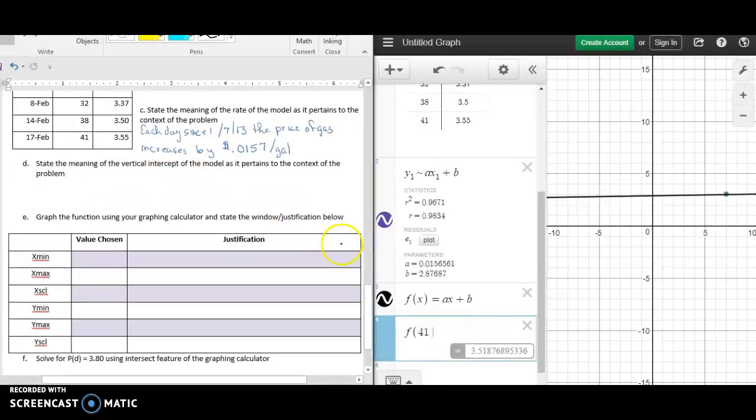Now we want to state the meaning of the vertical intercept. We know that the vertical intercept is 2.877, and so that means on January 7th of 2013, the price of gas was $2.87 per gallon.